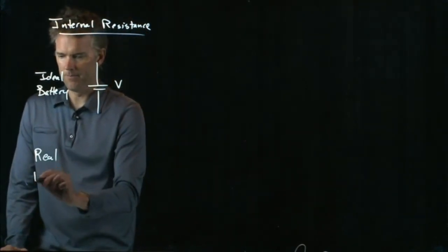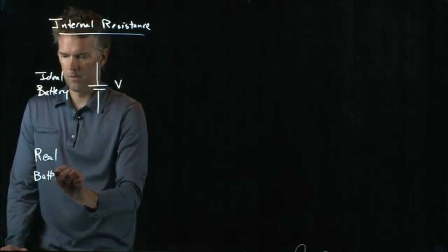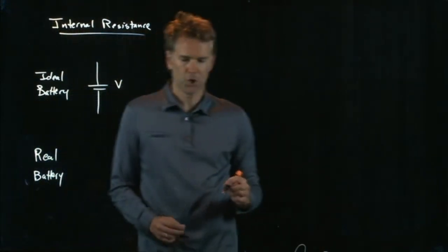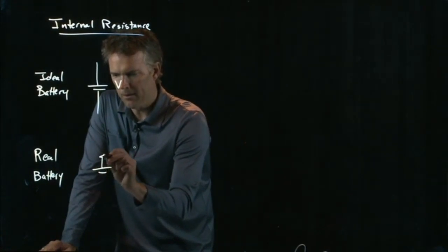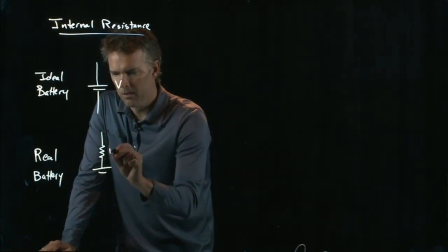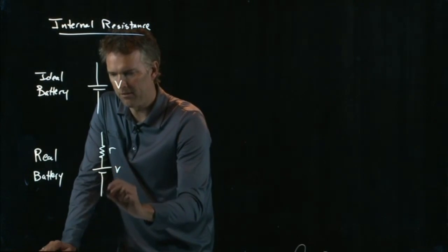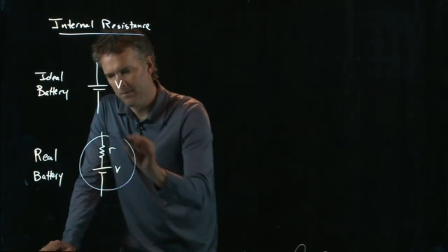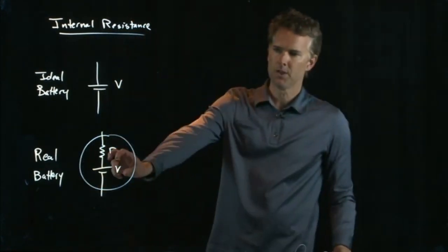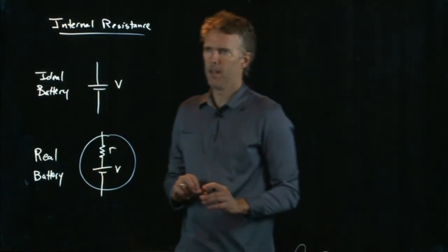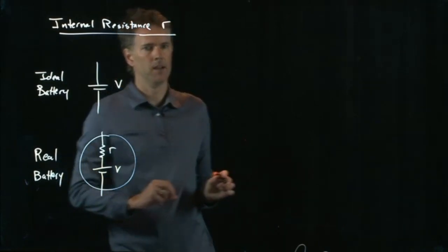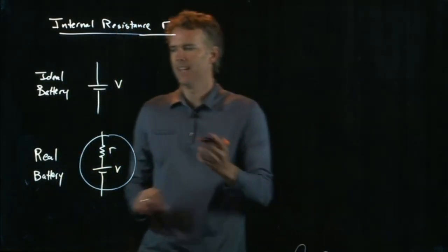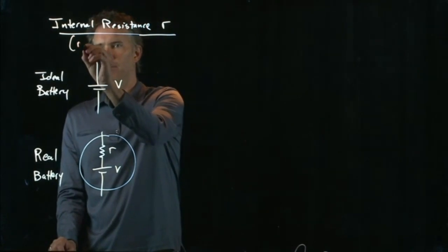A real battery has some internal resistance to it. So a real battery should really be modeled as this: a voltage plus an internal resistance. And that's this little lowercase r. What is the resistance inside a battery?